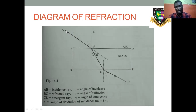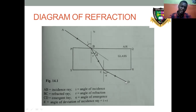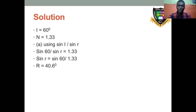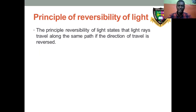Who says our experiment should only go in the direction A to B, B to C, and C to D? The light will change direction from D to C, C to B, and B to A. That is what we call the principle of reversibility of light.